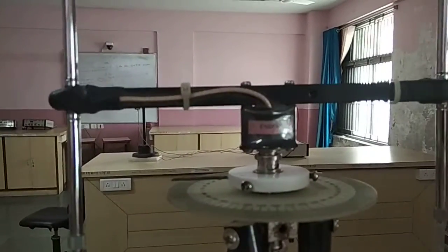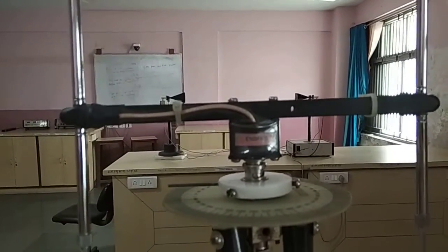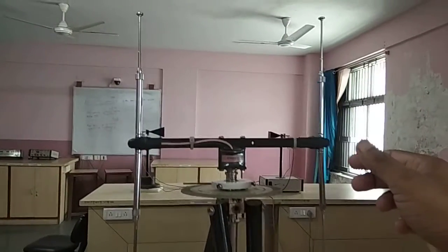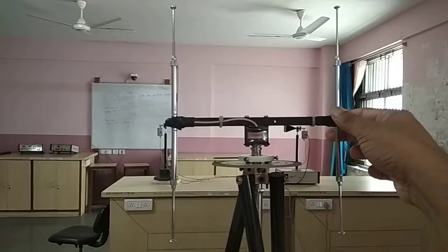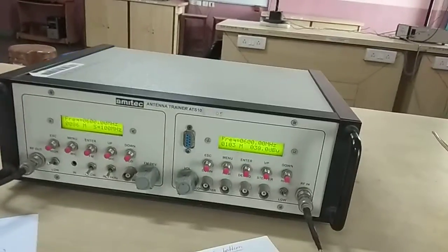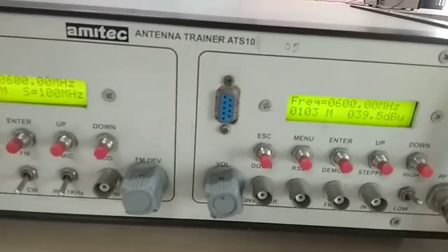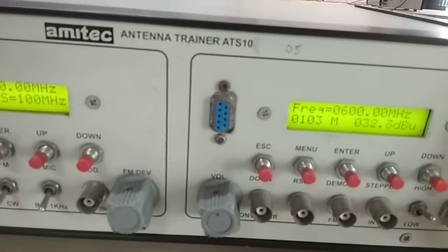Look at the end fire antenna which is now mounted up on the transmitting mount and we are moving it, and here we are getting the values of corresponding radiations.